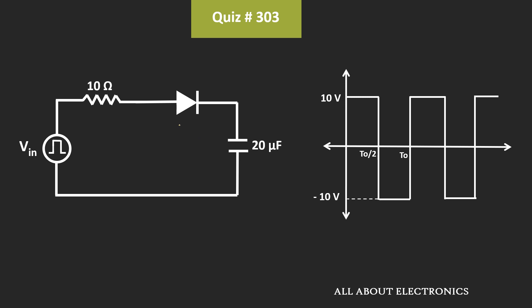Now here, since the diode is an ideal diode, in the ON condition it will act as a short circuit. And we have been given that the capacitor is initially uncharged.